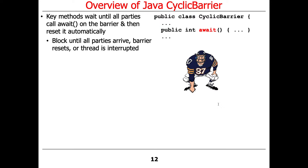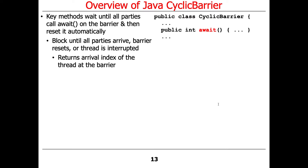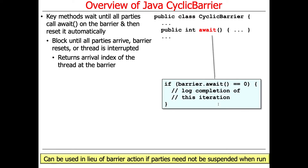The await method with no parameters will block until all the parties arrive, the barrier is manually reset — we'll talk about manual resets in a minute — or the thread is interrupted. Await returns the arrival index of the thread at the barrier, and this index is counted down as the threads show up, from the original party count provided to the constructor.